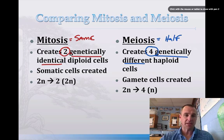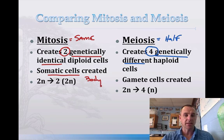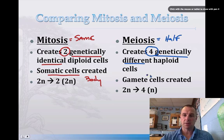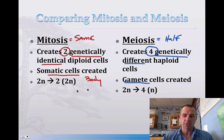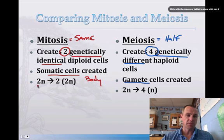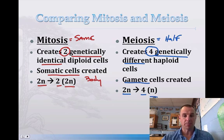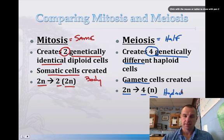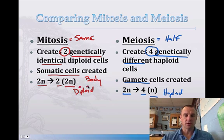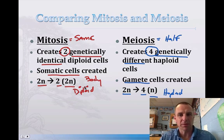Mitosis creates what we call somatic cells — or body cells. Meiosis creates gametes. In mitosis, you go from a diploid cell to two diploid cells. In meiosis, you go from a diploid cell to four haploid cells. That's a good chart to know for the test — it really pulls everything together.